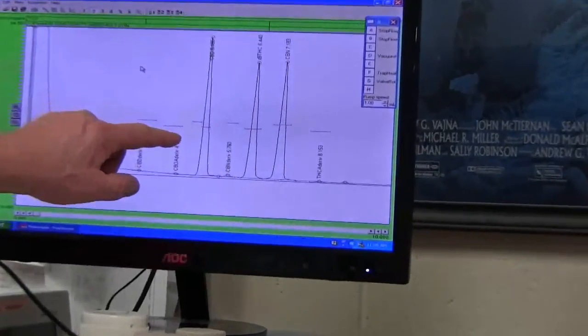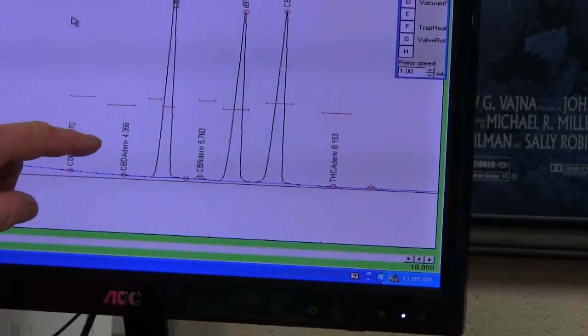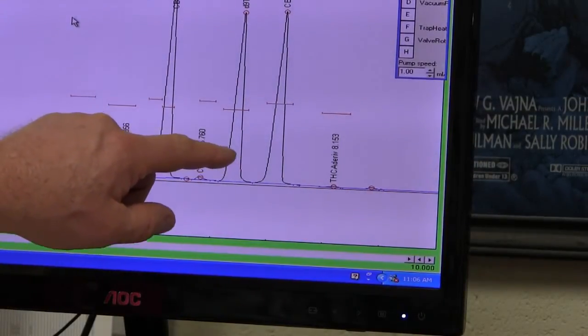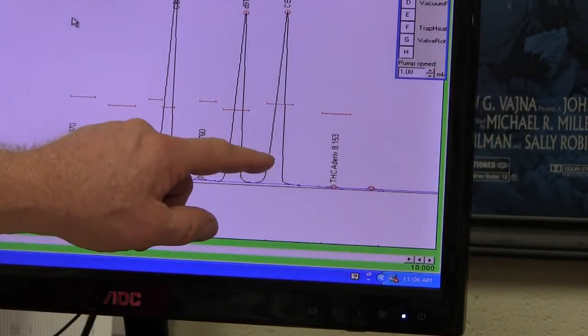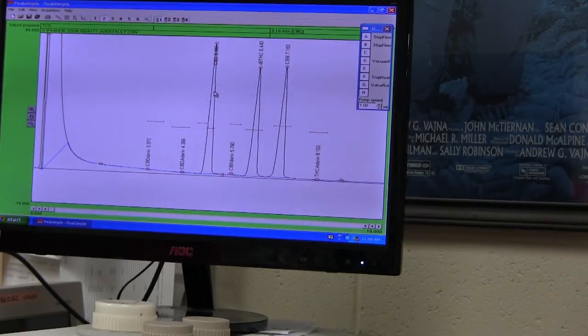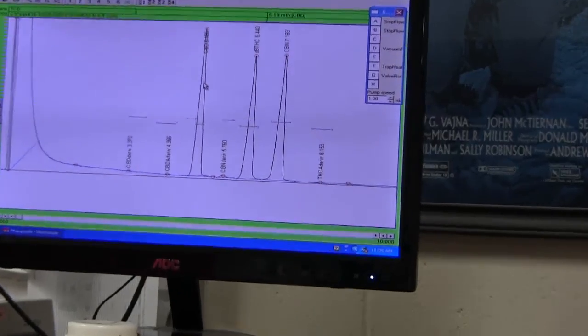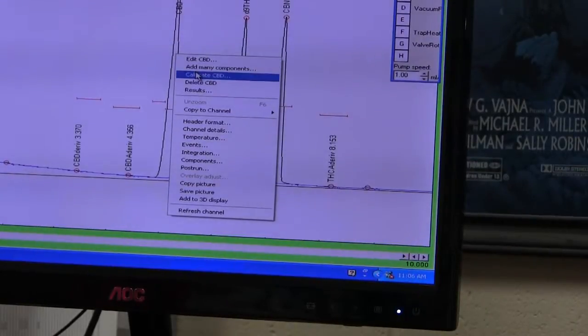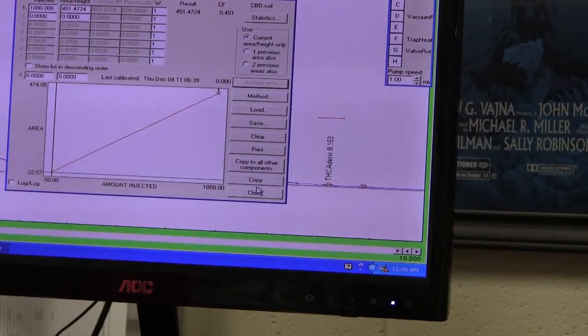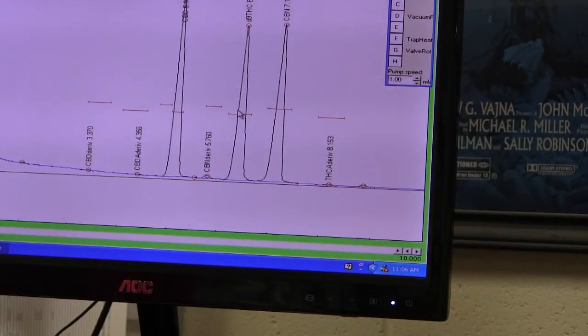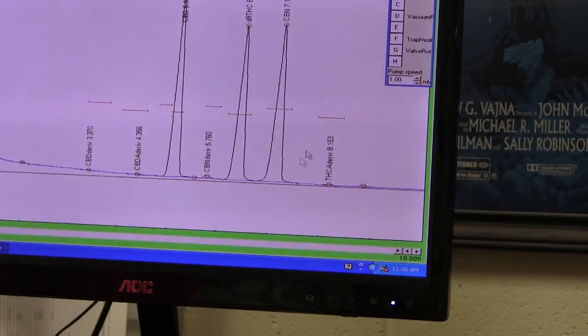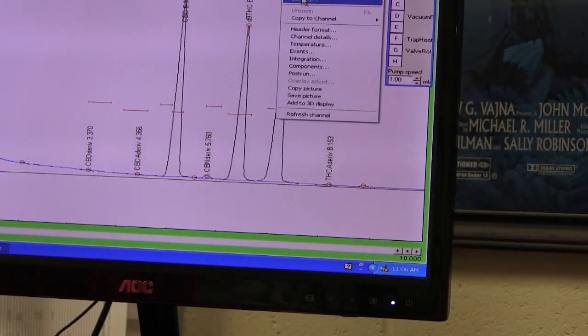So the chromatogram that results from injecting the 3 cannabinoid standard gives us a CBD peak, a delta-9-THC peak, and a CBN peak. So you point to each peak in turn, so I point to the CBD peak and hit calibrate, and then calibrate the CBD peak, calibrate the THC peak, and calibrate the CBN peak.